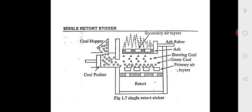Gradually the burning coal rises up. Coal is fed from the bottom so it rises up. On the right side you can see: first is primary air, above that is green coal, above that is burning coal, and at the top is ash. This is a bottom-fed underfeed retort. Above the green coal, an incandescent coke layer is formed, and above that the ash layer is formed. So first you have green coal, then it burns and becomes incandescent coke, and above that there is ash.